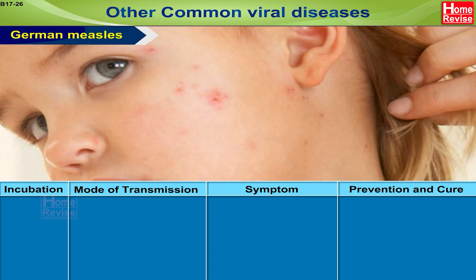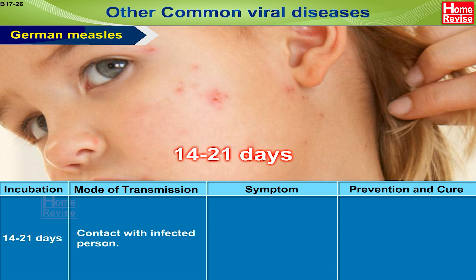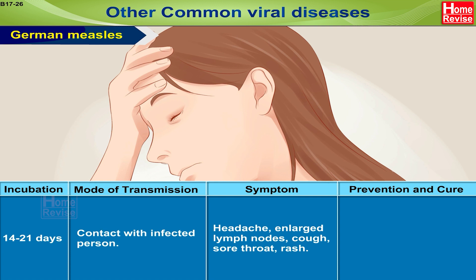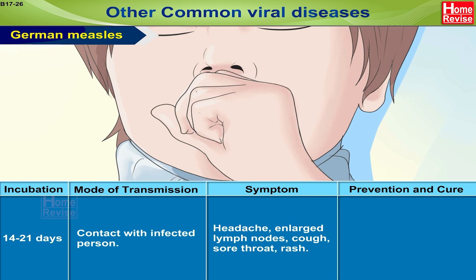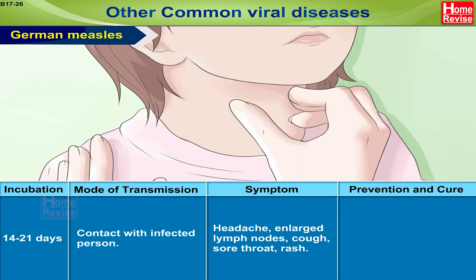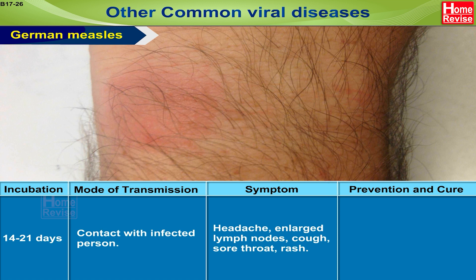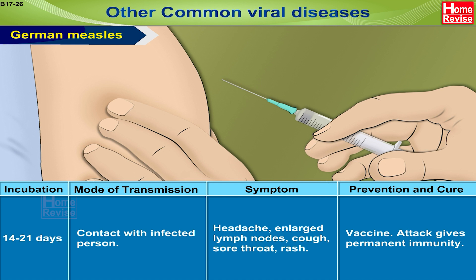German measles: incubation period is 14 to 21 days. Mode of transmission is contact with an infected person. Symptoms include headache, enlarged lymph nodes, cough, sore throat, and rash. Prevention and cure: vaccine available; an attack gives permanent immunity.